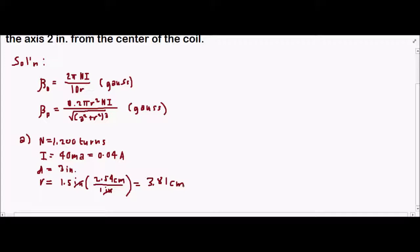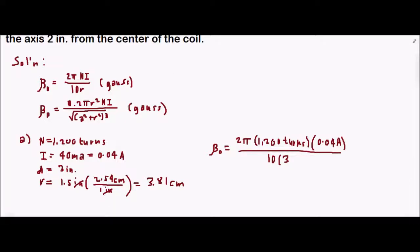Now it's just a matter of substituting the given values. We have β equals 2πN times I, that's 1,200 turns times 0.04 amps, all over 10 times our radius of 3.81 centimeters.